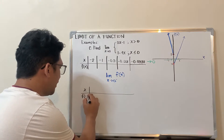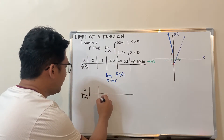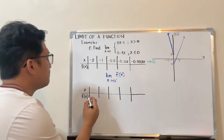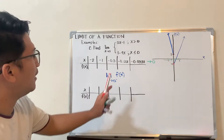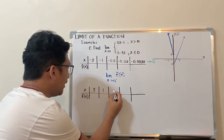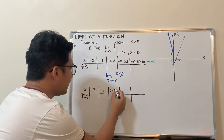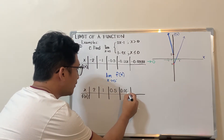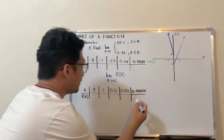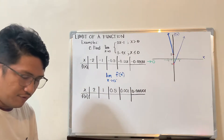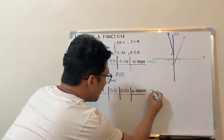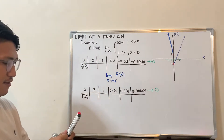For the right-hand table, we have x and f(x) with 5 values to consider. This time the numbers are positive — so we start with positive 2, then 1, 0.5, 0.001, and 0.00001 in decimal places. In the same way, we are approaching 0 but from the right — this is x approaches 0 from the positive side.